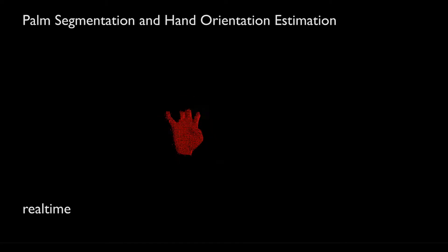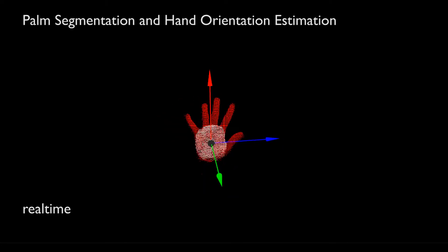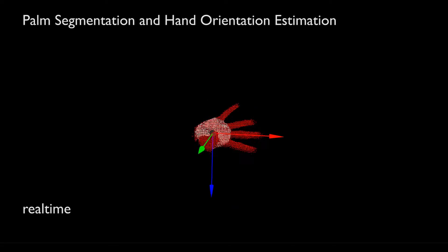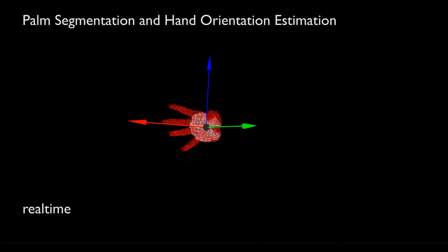After filtering the input depth data to extract the hand, we segment the palm and find the orientation of the hand using principal component analysis. The extracted hand orientation is robust to fast hand motions.